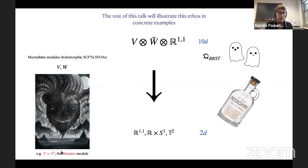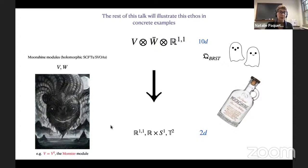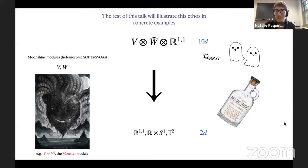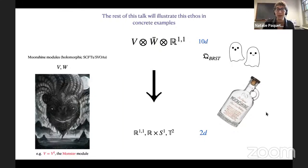Some moonshine modules, which are nice VOAs or super VOAs, will furnish particularly nice examples. One of the canonical examples of a vertex operator algebra is the monster module, and it will be one of our starring examples in this talk. Since 2020 has felt like Ragnarok, the role of the monster module in this talk will be played by Jormungandr, the world serpent. When you give a talk on monstrous moonshine, you have to choose your favorite monster to represent the monster module whenever it appears.